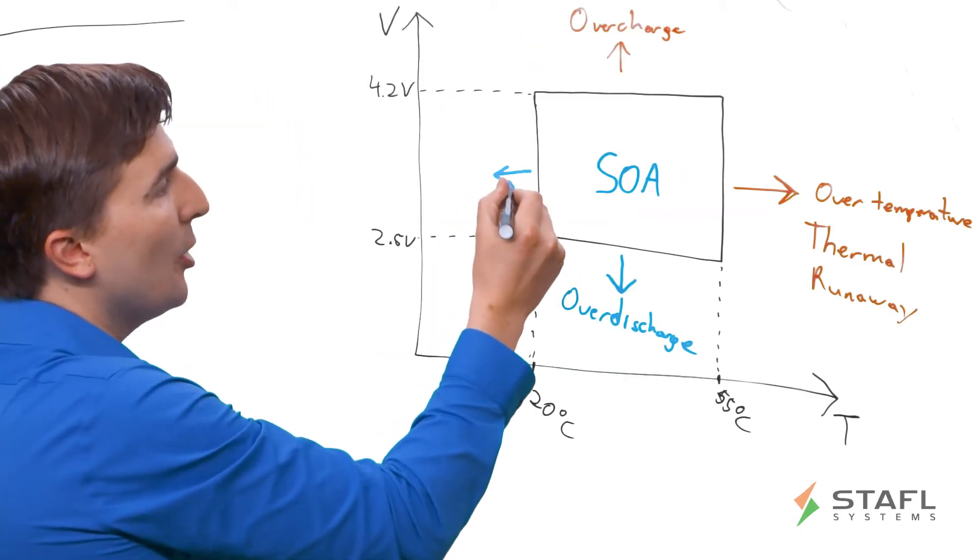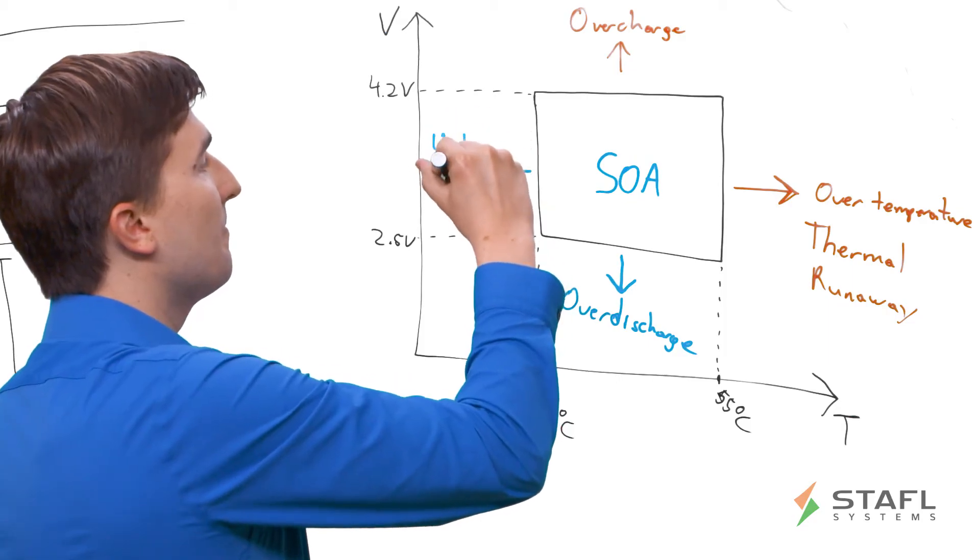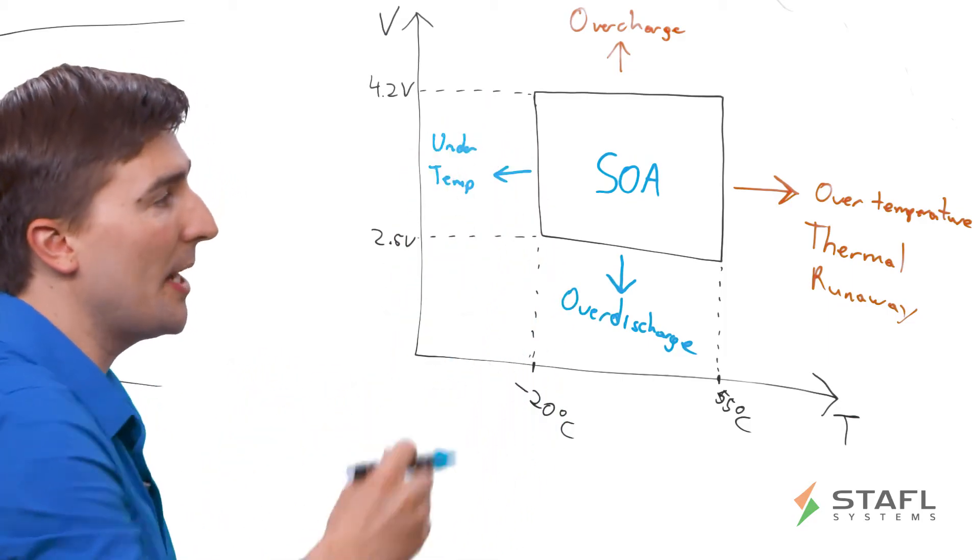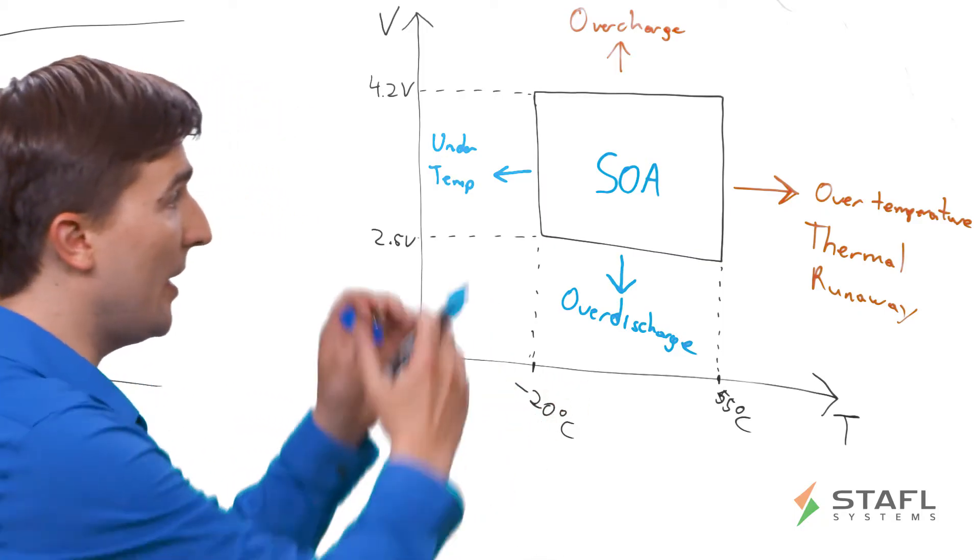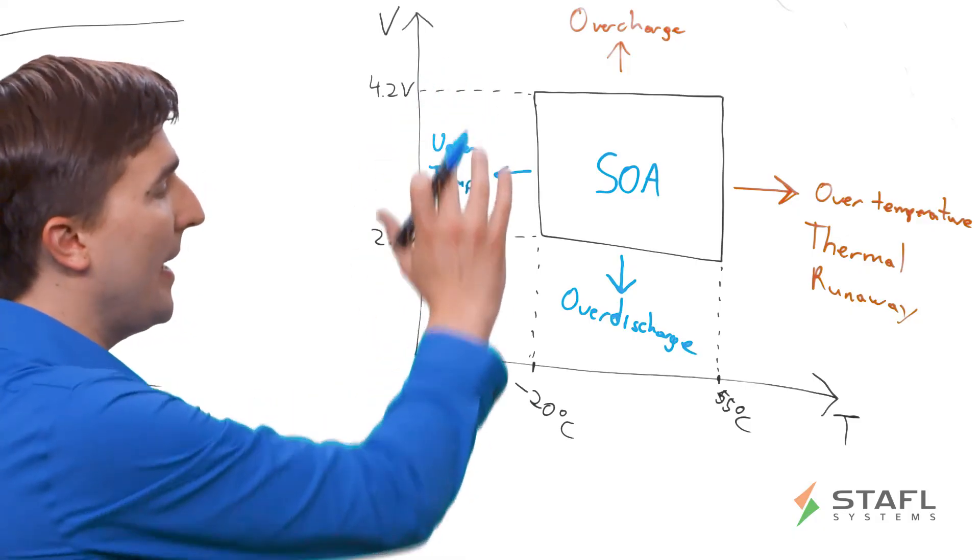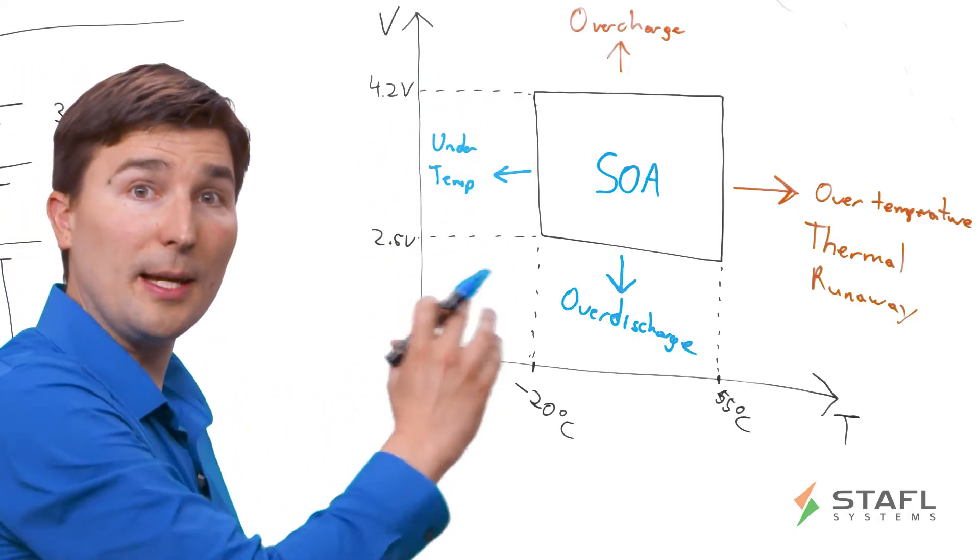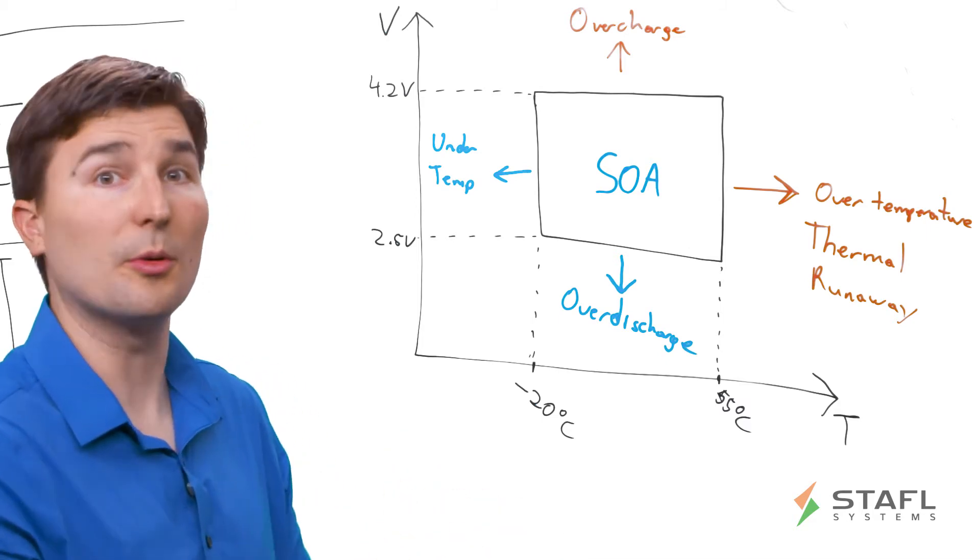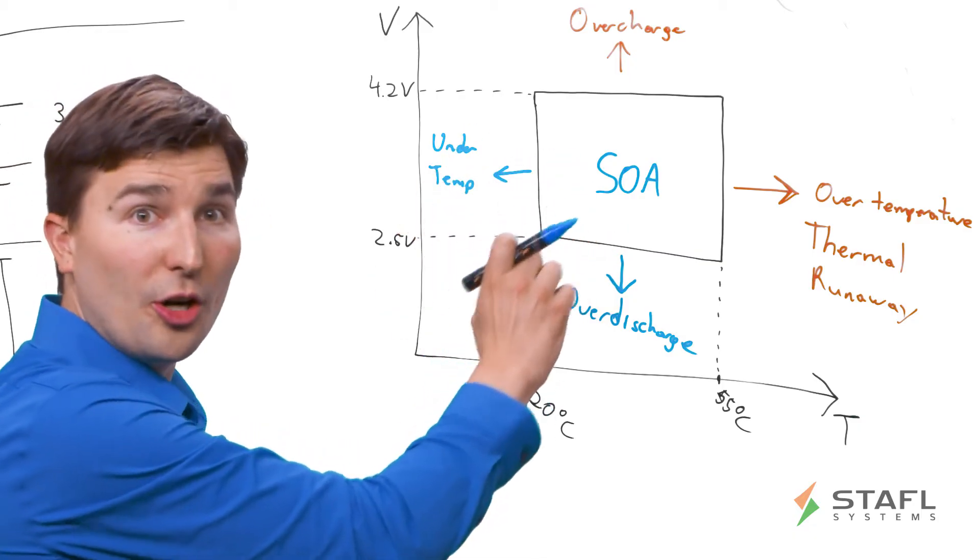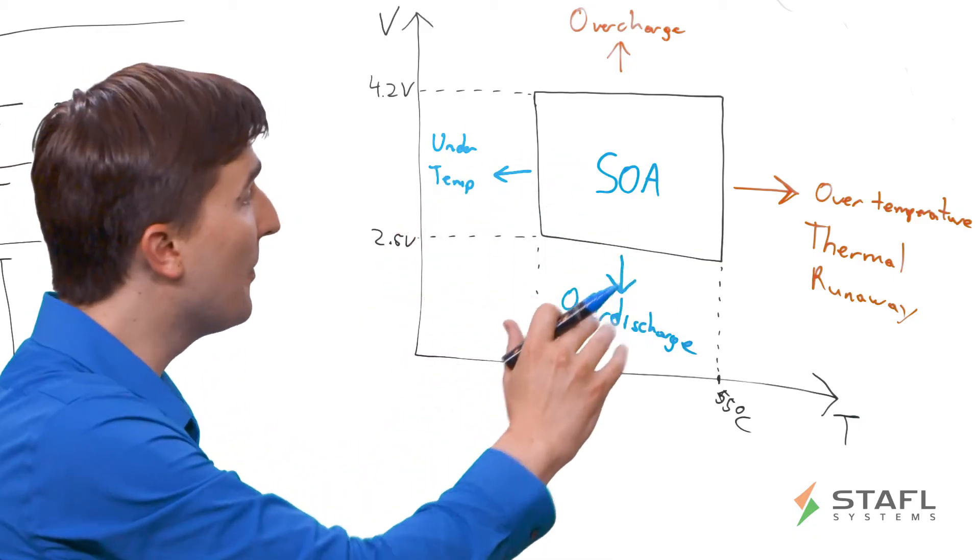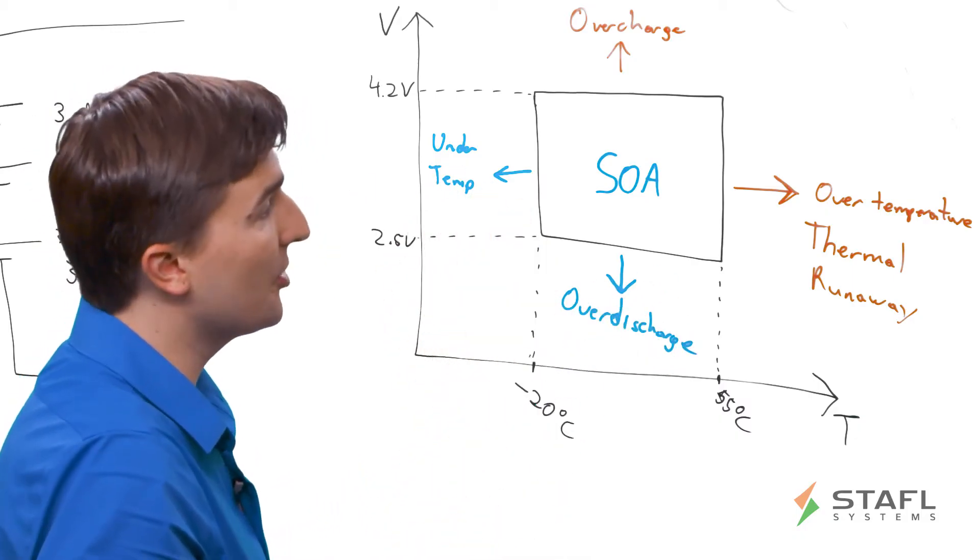Likewise, if you go to what's called the under-temperature case, this is where you have a cell that's less than, say, negative 20 degrees C, and you're still trying to charge or discharge. And at these cold temperatures, the electrochemistry within the cell is no longer able to actually move the ions from the anode to the cathode or vice versa. So you're actually not able to efficiently get charge into or out of the cell. And this can also lead to lithium plating and the issues that we just discussed with the over-discharge scenario.